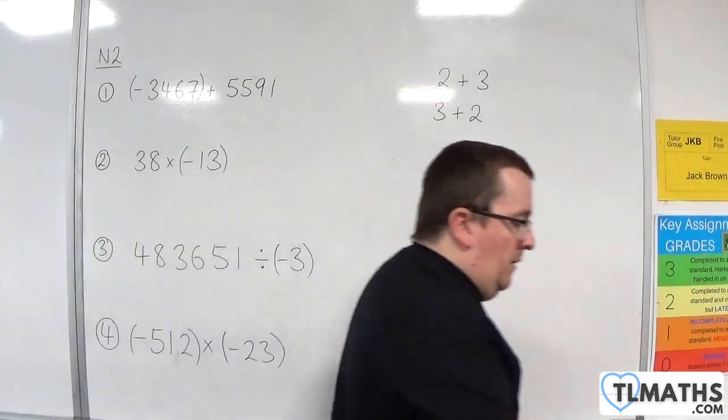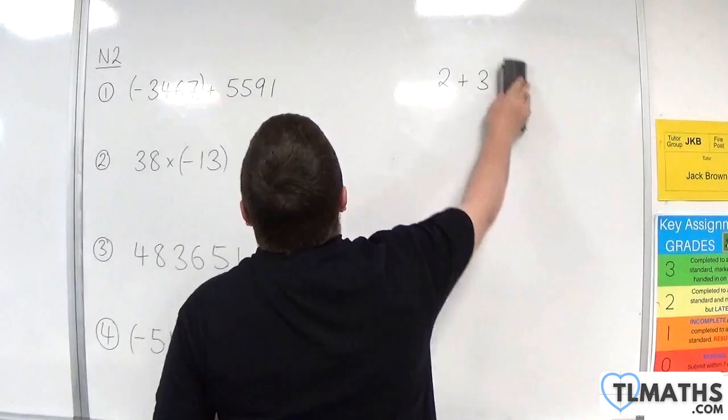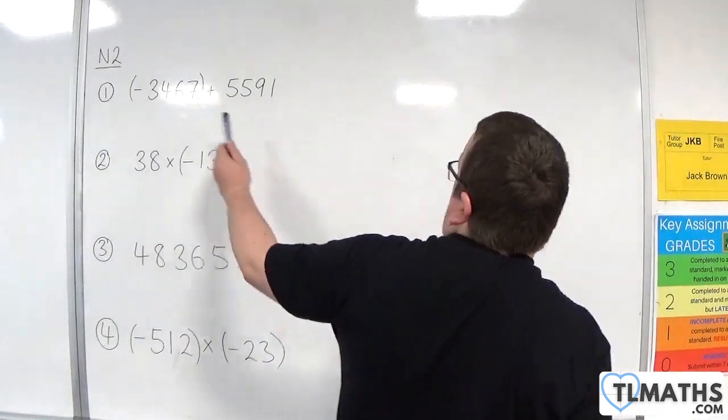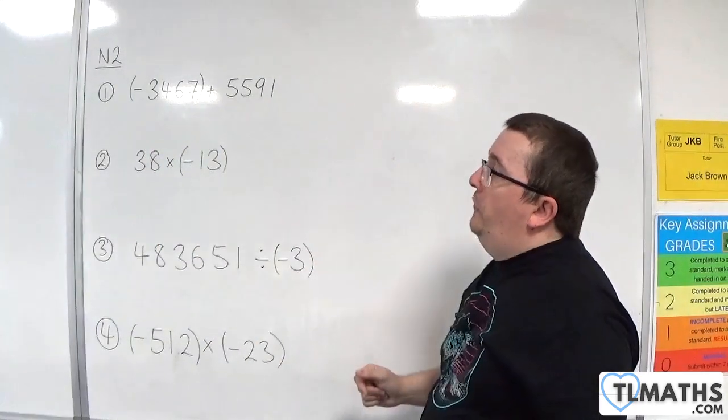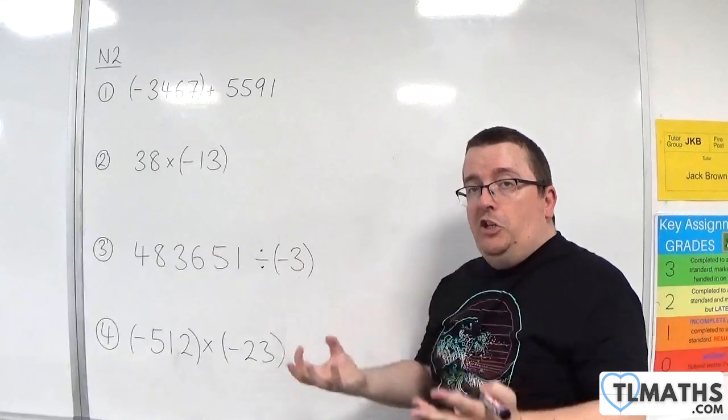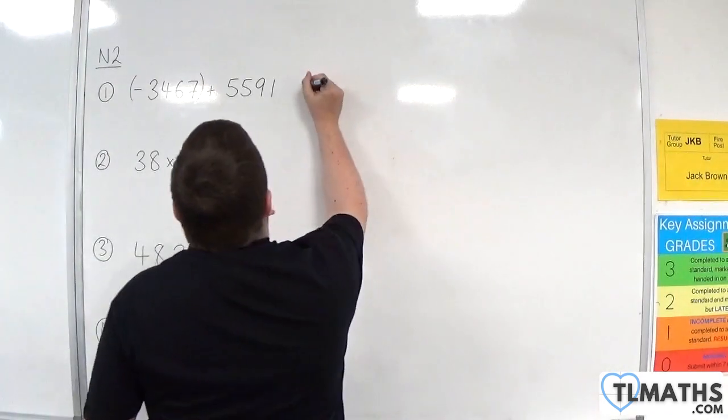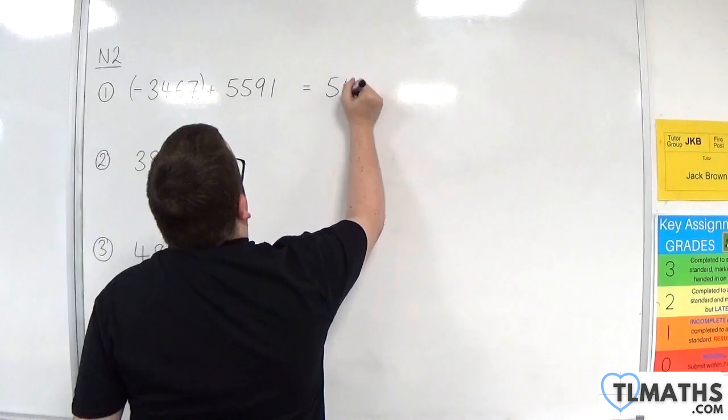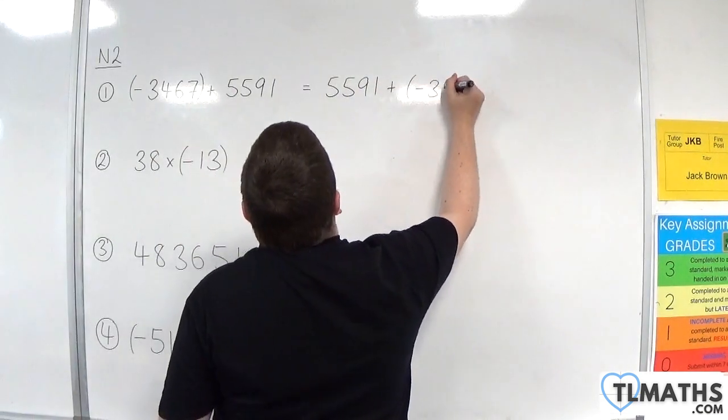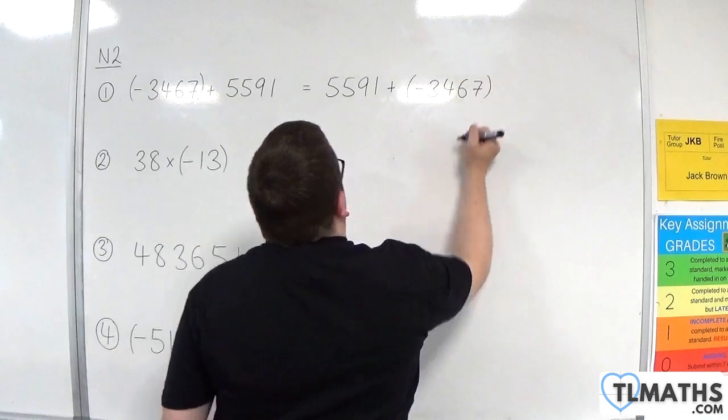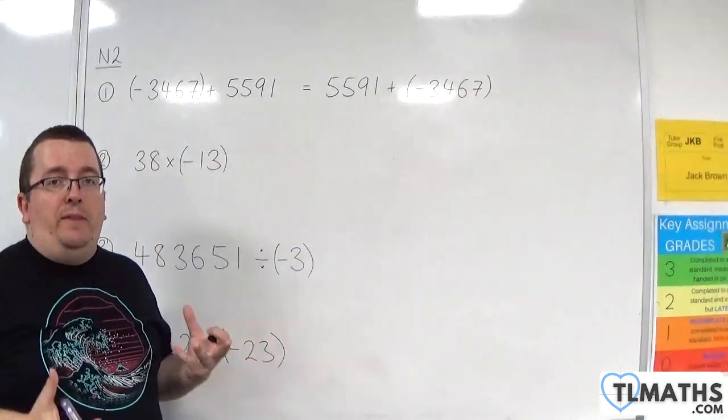So that means that if we are doing -3,467 + 5,591, I'm adding two numbers together, so that must be the same as 5,591 + (-3,467). These two things have to be the same.